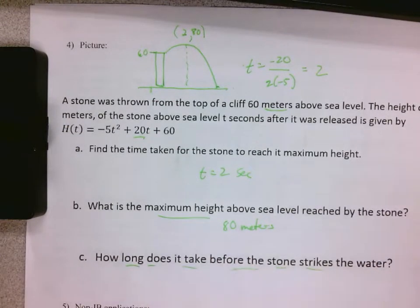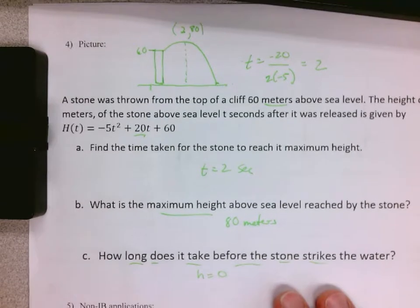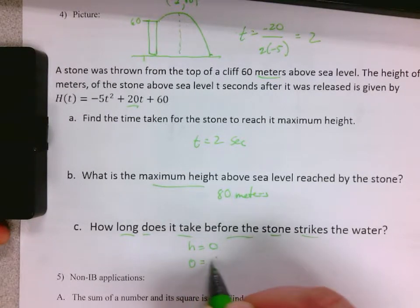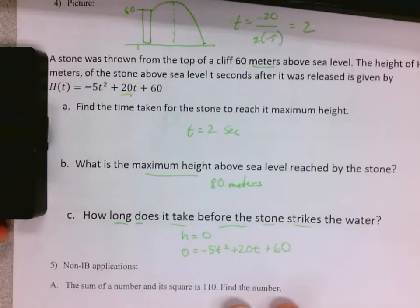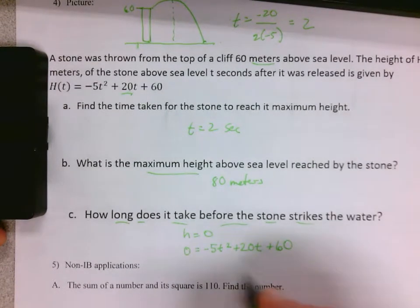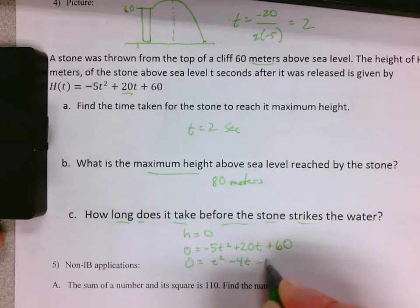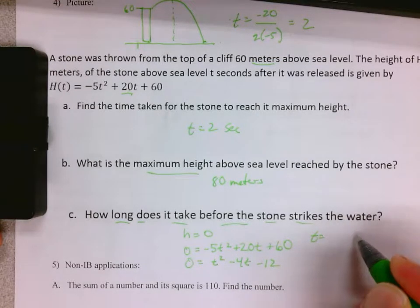How long does it take for the stone to strike the water? When it hits the ground, the height is zero. This is saying when is the height zero. So the height is zero - you can solve this any way you want. We just solved it several different ways last quiz. I'm going to divide everything by negative 5 and I bet it factors. You could do the quadratic formula, complete the square - any of those methods work.